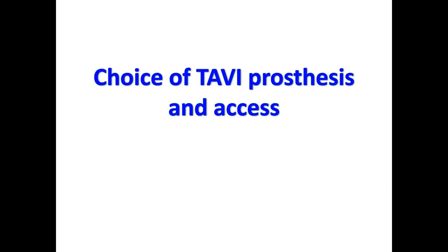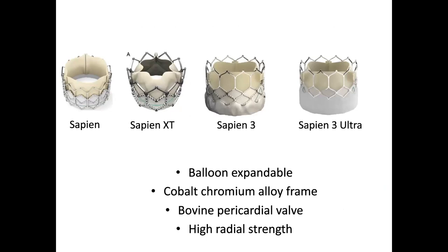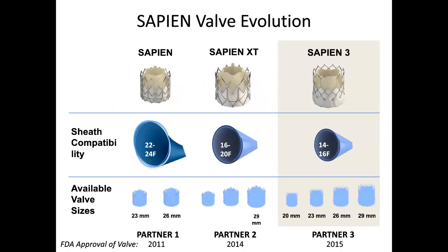In terms of prosthesis choice, valve iterations are booming — every year there's a new generation. The intraannular balloon-expandable valve is cobalt chromium with bovine pericardial tissue and high radial strength. It's a true workhorse valve, very easy to implant. But there are concerns about thrombosis, and I'm putting fewer and fewer 23mm SAPIEN valves because I think the durability will be less — similar concerns apply to the 19mm valve.